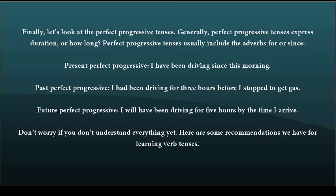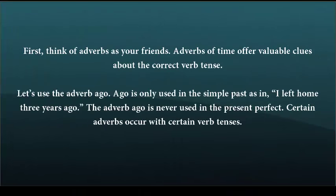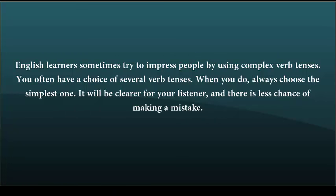Don't worry if you don't understand everything yet. Here are some recommendations we have for learning verb tenses. First, think of adverbs as your friends. Adverbs of time offer valuable clues about the correct verb tense. For example, ago is only used in the simple past, as in I left home three years ago — the adverb ago is never used in the present perfect. Certain adverbs occur with certain verb tenses. When you have a choice of several verb tenses, always choose the simplest one. It will be clearer for your listener, and there is less chance of making a mistake.